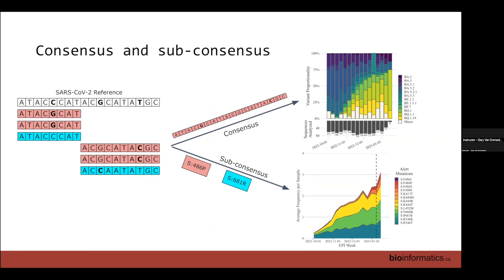Here at the National Microbiology Laboratory, we take a look and see what is circulating in wastewater at the national level. This is an actual plot of that. If mutations increase rapidly in prevalence, that gives us a sense of whether a mutation or collection of mutations may be associated with, for example, increased transmissibility or increased immune evasiveness.